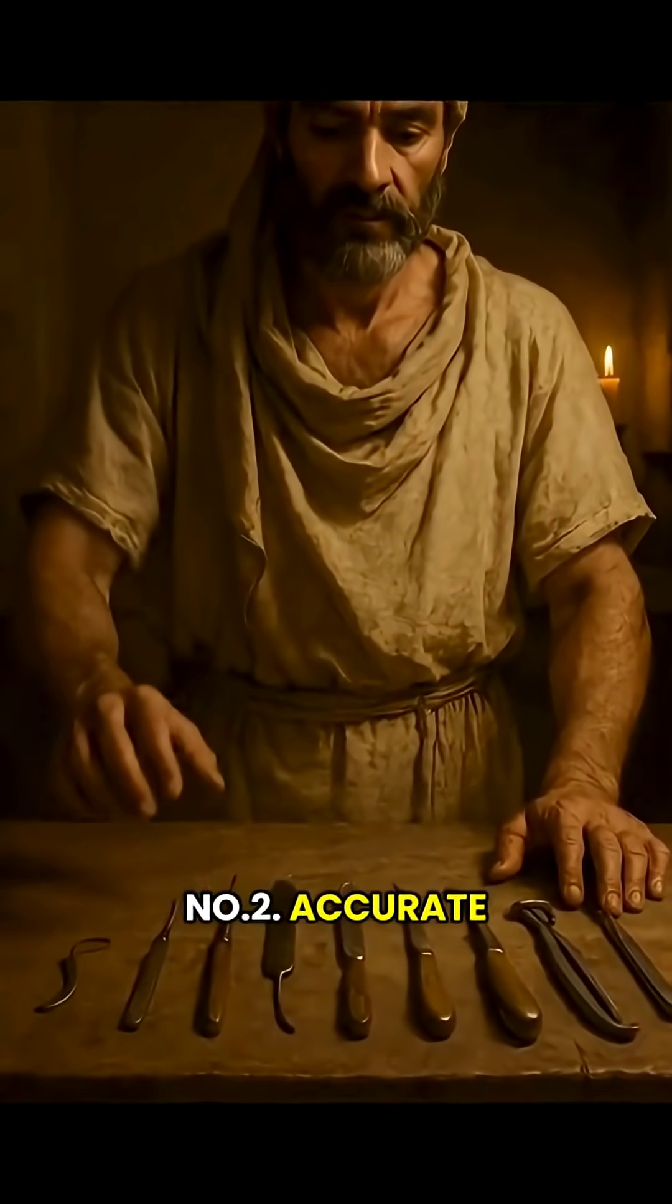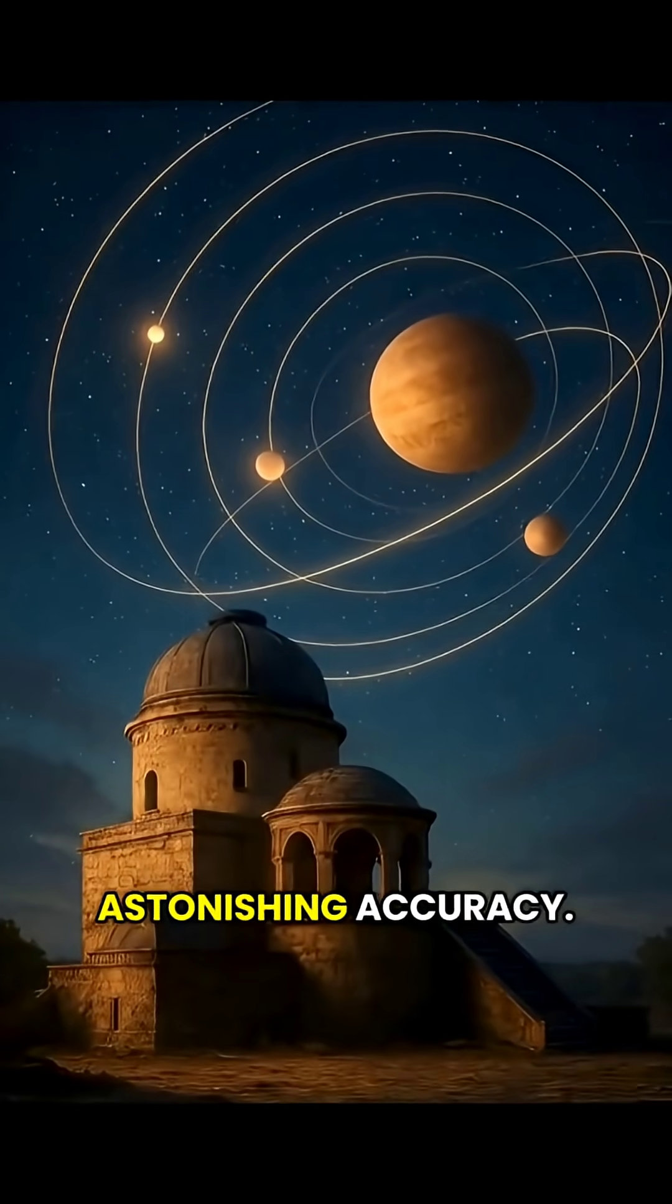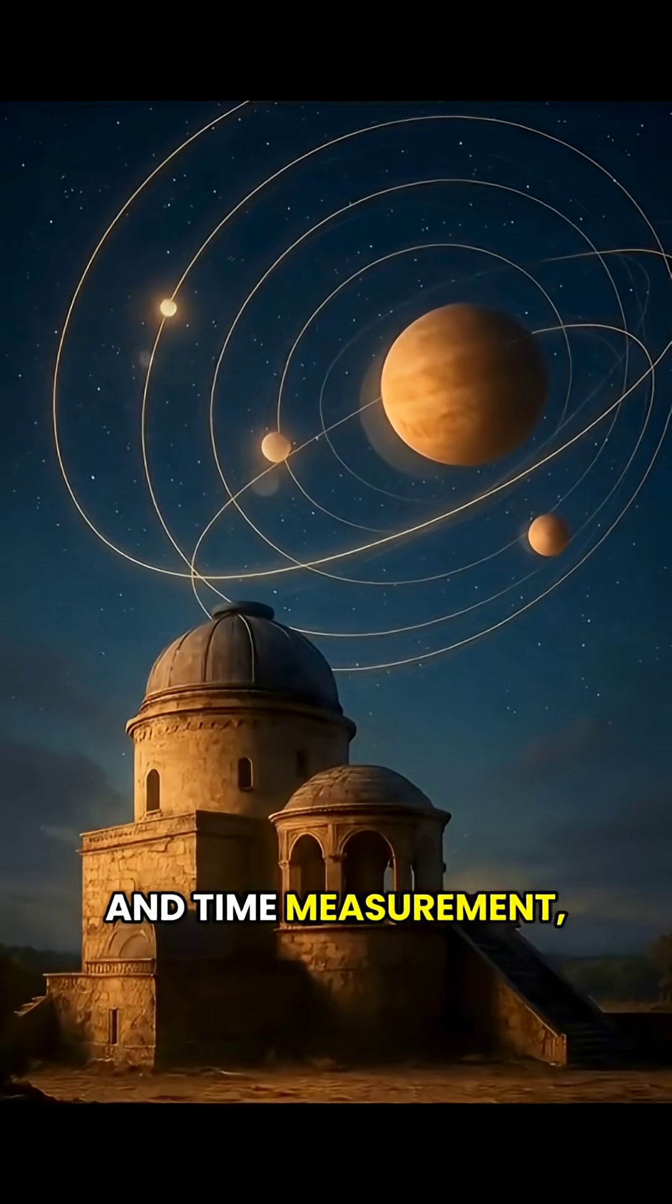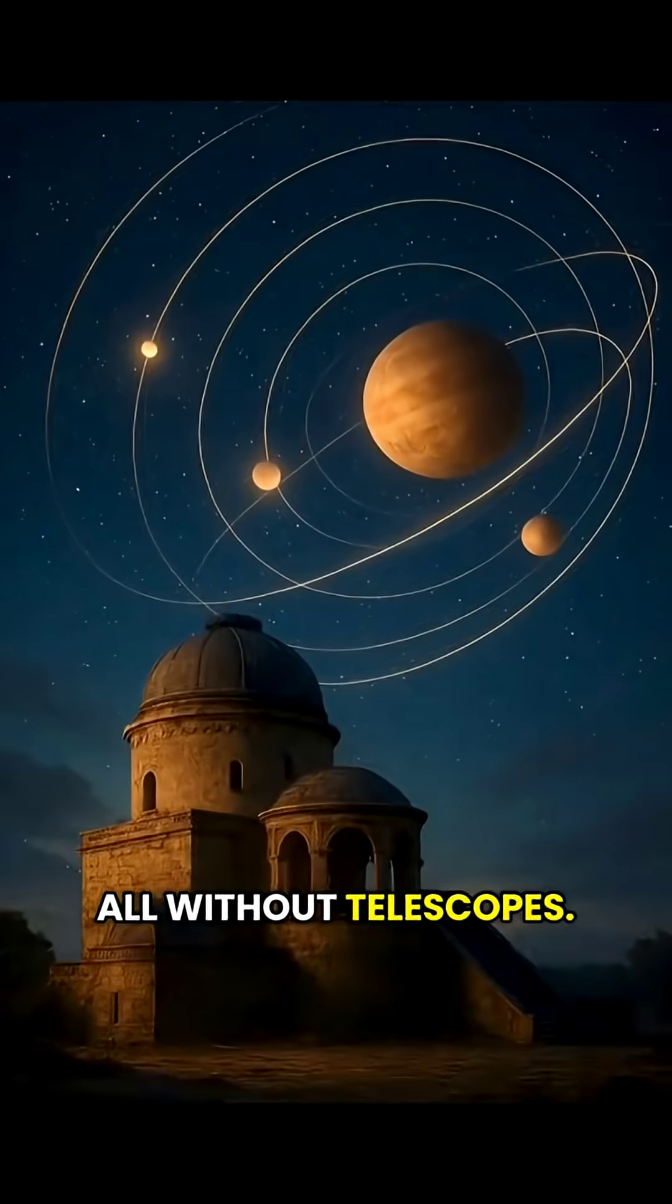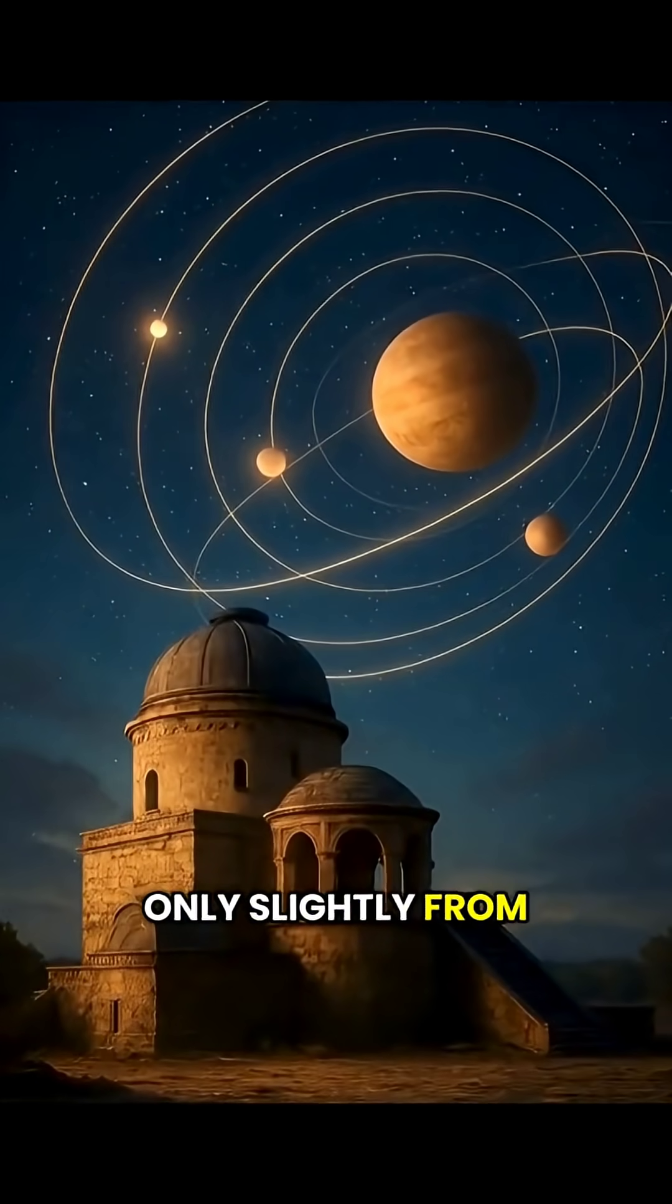Number two, accurate calculation of planetary motion. Indian astronomers calculated planetary cycles with astonishing accuracy. They understood eclipses, orbital patterns, and time measurement, all without telescopes. Some calculations differ only slightly from modern data.